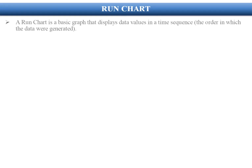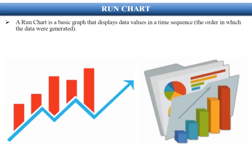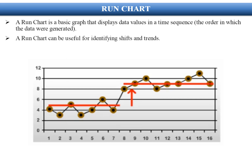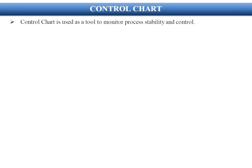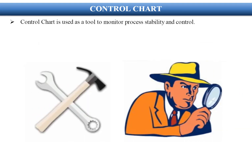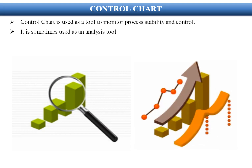A run chart is a basic graph that displays data values in a time sequence — the order in which the data were generated. A run chart can be useful for identifying shifts and trends. A control chart is used as a tool to monitor process stability and control, and is sometimes used as an analysis tool.